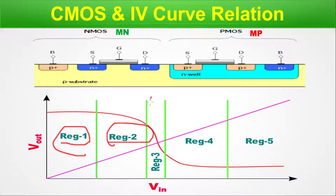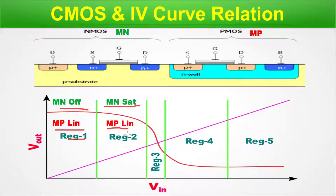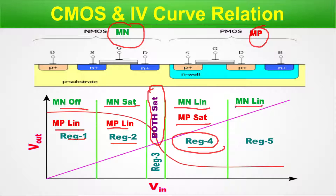There are five regions on the CMOS switching curve. In region 1, MN is OFF (in cutoff) and MP is in the linear region. In region 2, MN is in the saturation region and MP is in the linear region. In region 3, both MN and MP are in saturation — as noted, the saturation region is used for the switching operation.